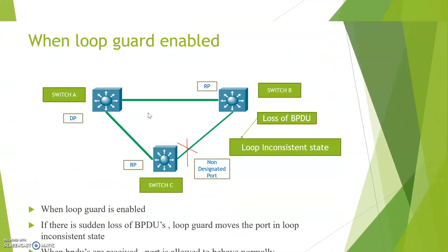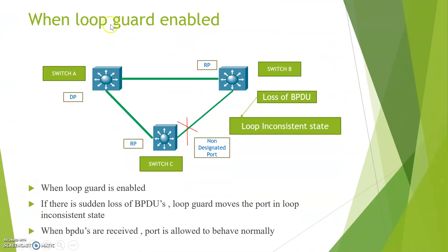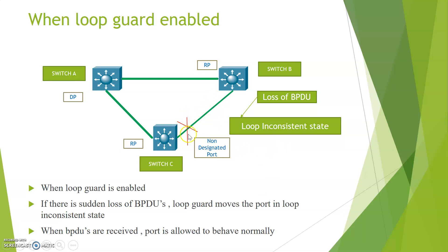The second scenario covers what happens to the non-designated port when Loop Guard is enabled. When there is a sudden loss of BPDUs and Loop Guard is enabled, Loop Guard moves the port into a loop inconsistent state. The purpose of this is to prevent the non-designated port from moving into a forwarding state upon sudden BPDU loss.